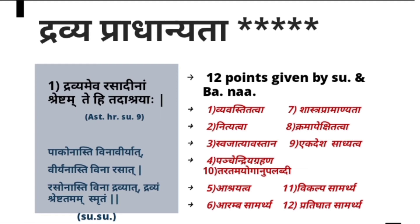Next comes Dravya Pradhanyata. The word Dravyaguna itself indicates Dravya is superior. The first reason is given in Ashtanga Hridaya Sutrasthana 9th chapter: 'Dravyam Eva Rasadhinam Shreshtam Tehi Tadashrayaha' — Dravya is superior compared to Rasa, Guna, Virya, Vipaka because Rasa, Guna, Virya, Vipaka all take shelter in Dravya. Dravya acts as Ashraya; Rasa Panchakas are Ashrayibhutas.